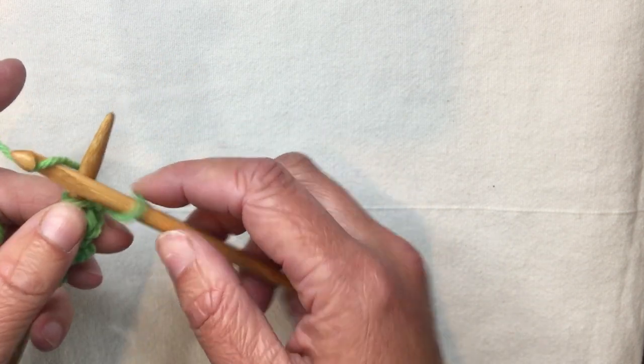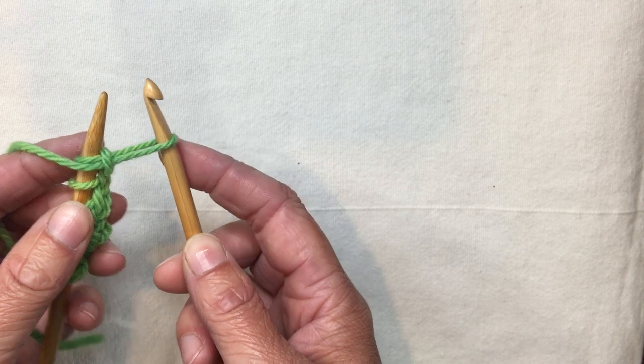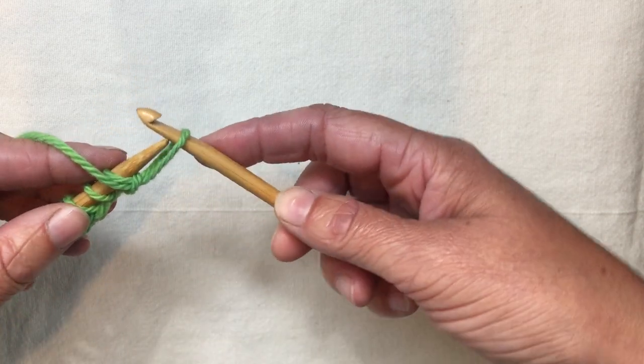Whenever you have enough stitches, including the loop that is on your hook, you're going to take the loop on your hook and put it onto your knitting needle.